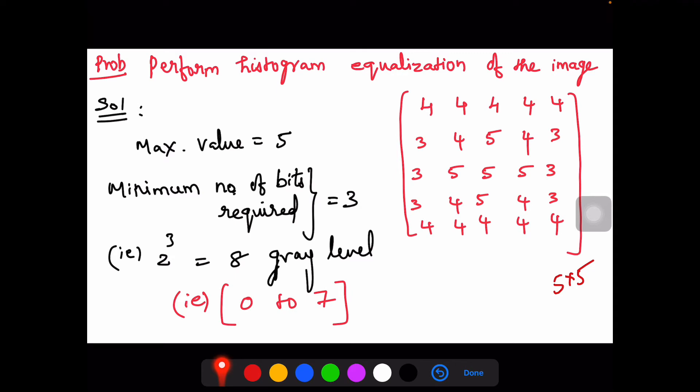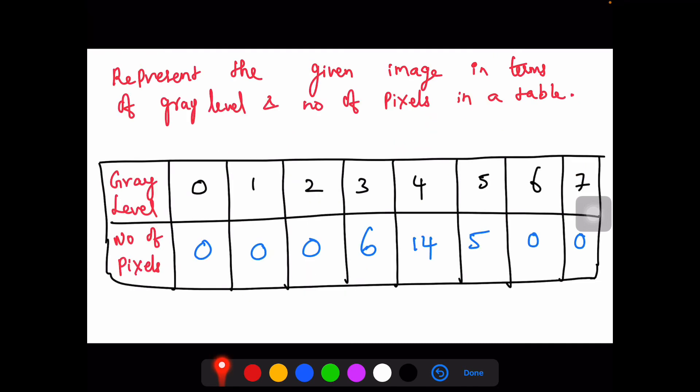First let us find the maximum value in the given image, which is 5. The number of bits required is 3, which means 2 power 3 is 8. It should have been 0 to 7, but here the pixel values like 4, 3 and 5 are the majority.